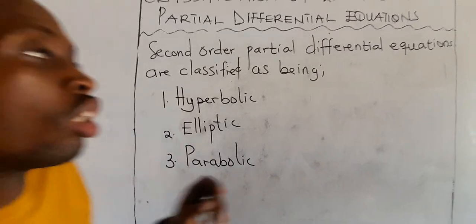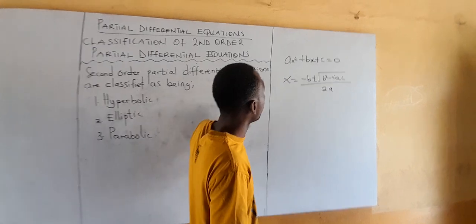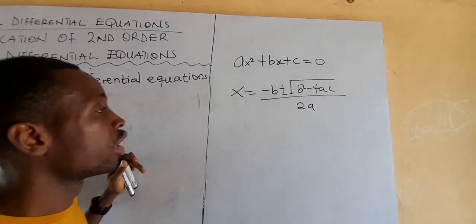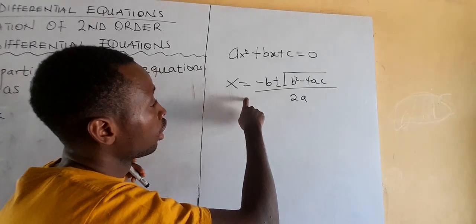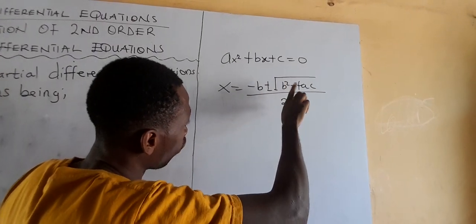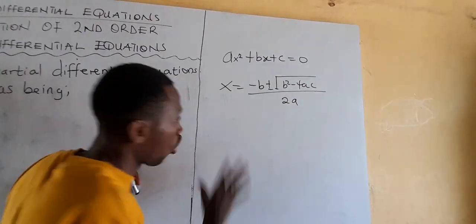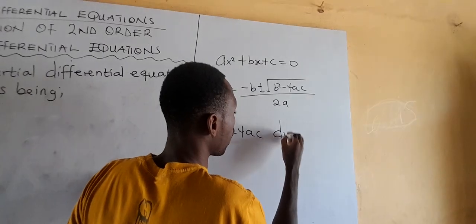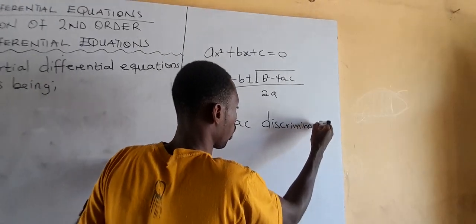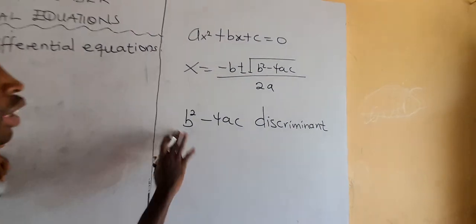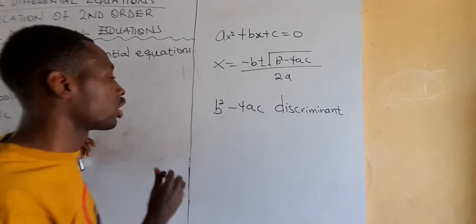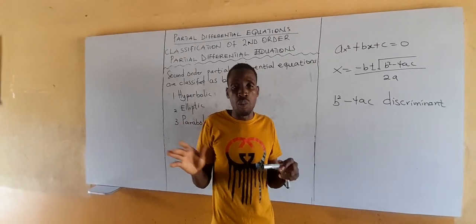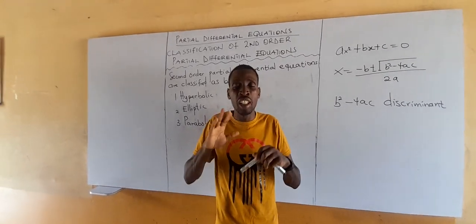What do we use to classify them? If you remember, this is the general form of a quadratic equation. When we make x the subject, we get x equal to negative B plus or minus the square root of B squared minus 4AC over 2A. We are not going to use all of that — we just use B squared minus 4AC. We call this the discriminant, and we use the discriminant in classifying second order partial differential equations.